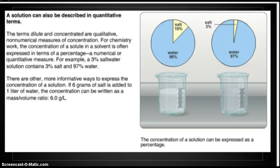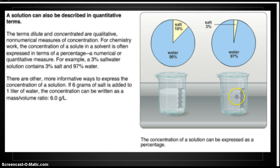A solution can be described in quantitative terms — quantitative means quantity, meaning you have to have numbers. The terms dilute and concentrated are qualitative, non-numerical measures of concentration. For chemistry work, the concentration of a solute in a solvent is often expressed in terms of percentage, a numerical or quantitative measure. For example, a 3% saltwater solution contains 3% salt and 97% water. If 6 grams of salt is added to 1 liter of water, the concentration can be written as a mass-volume ratio of 6.0 grams per liter. For this lesson, we're just going to look at percentages. The second beaker would be more dilute, while the first beaker would be more concentrated because there's a higher concentration or higher percentage of solute compared to the solvent.